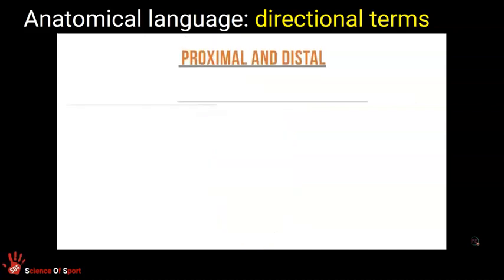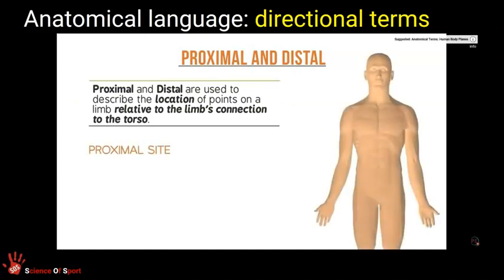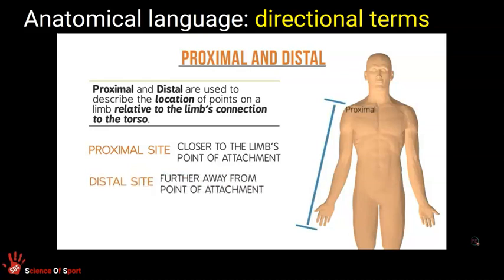Proximal and distal are used to describe the location of points on a limb relative to that limb's connection to the torso. The proximal site is the one closer to the limb's point of attachment, while the distal site lies further away from the point of attachment. As an example, the wrist is considered distal to the elbow, and the elbow is proximal to the wrist.